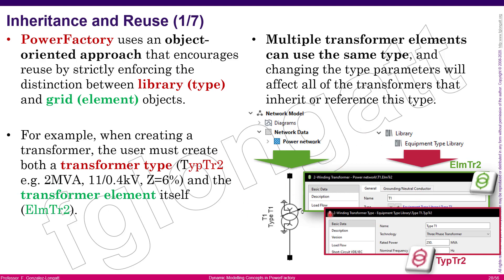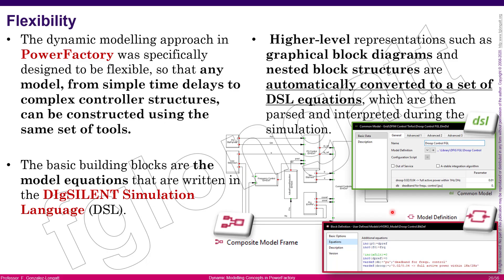What does reuse mean? It's very simple. For example, coming back to the transformer: you can have 100 transformers all with the same electrical specifications — say 250 MVA, 50 Hz, 150 to 230 kV. Inside your network you can have 100 transformers, but all of them reuse the same type. Those transformers can have different tap positions and be connected in different places in the network, but all of them share the same parameters from the type.